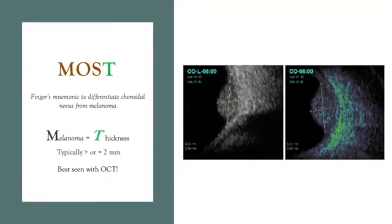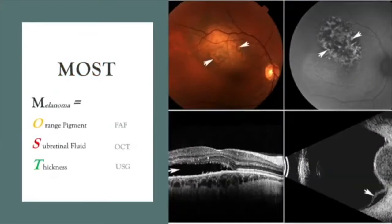T is the last letter of MOST, and it stands for thickness. Typically, two or more millimeters is considered a risk factor that a nevus is likely a melanoma. A-scan was used classically to measure the anterior-posterior thickness of melanomas; however, currently, and especially for small lesions, B-scan can be easier. So: orange pigment best seen with fundus autofluorescent imaging, subretinal fluid best seen with OCT imaging, and thickness best measured by ophthalmic ultrasonography.